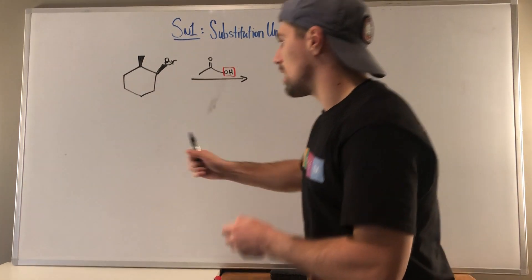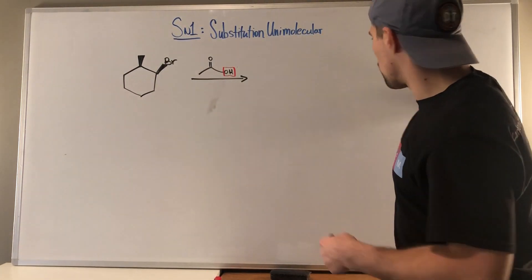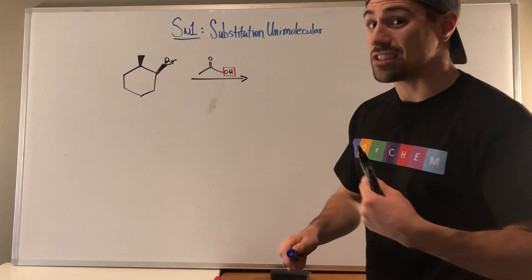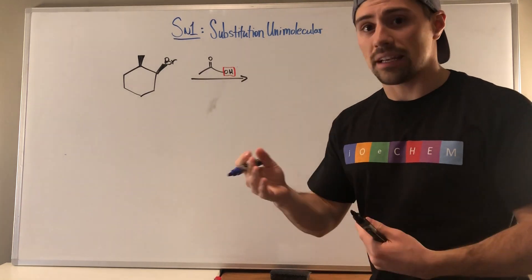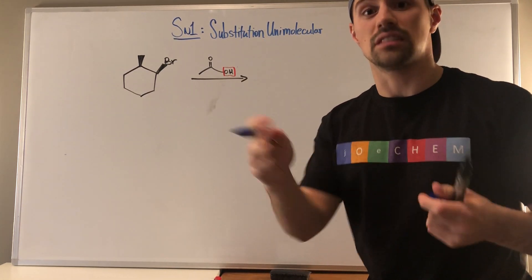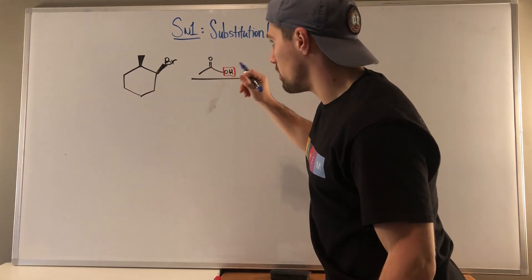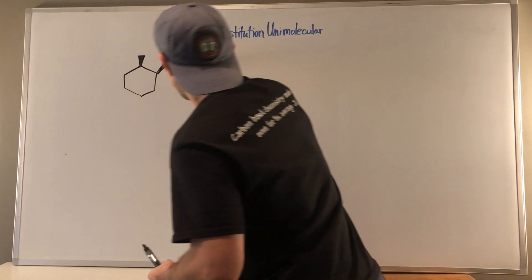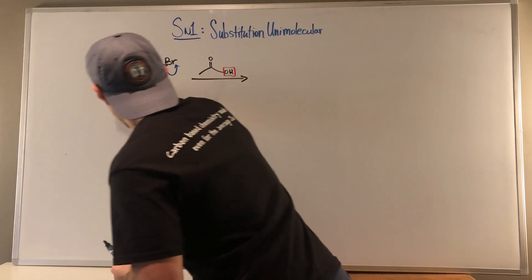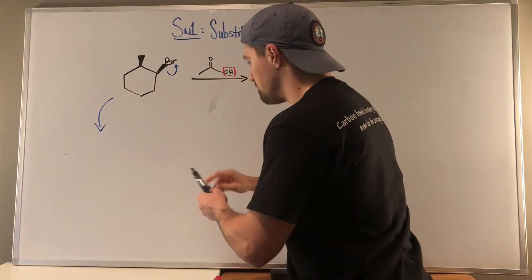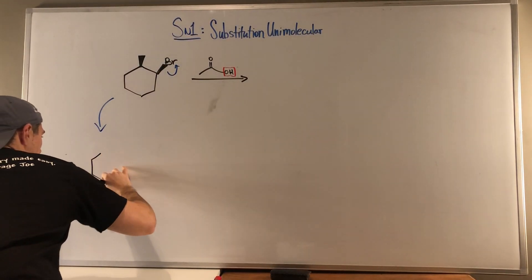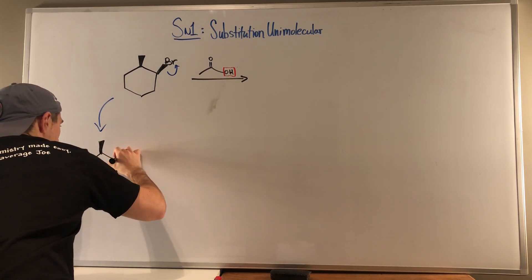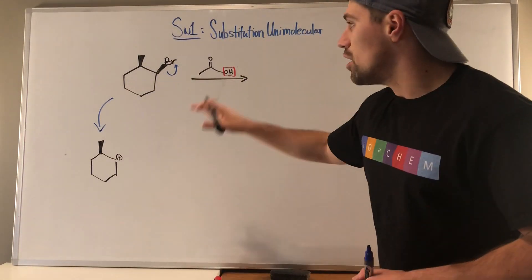So I'm going to go ahead and draw the mechanism down here and get to our product. Since we've determined this is an SN1 situation, our very first step in drawing the mechanism is solvolysis. The leaving group is going to leave because this polar protic solvent is going to help the leaving group wean off and just bounce. So we'll show that leaving — leaving group leaves, we have solvolysis, and then we have the resulting carbocation.